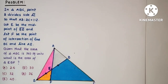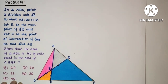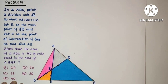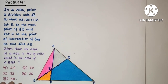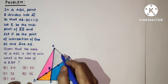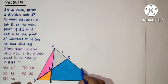Hello friends and respected viewers, welcome again. Today we will do an area-related very interesting problem. We are given a triangle ABC where E is the midpoint of BD. The area of triangle ABC is 360 square units and AD is to DC as 1 is to 2. We have to find the area of triangle BEF. Let us see how to solve the question.